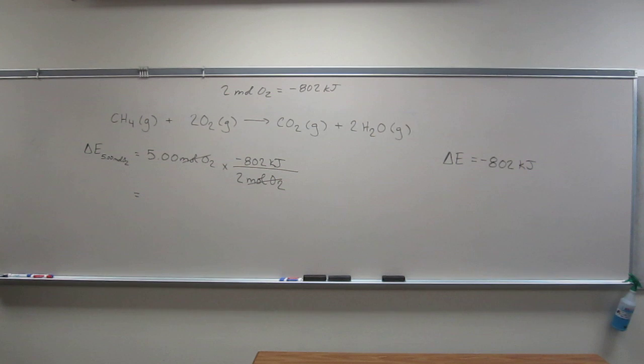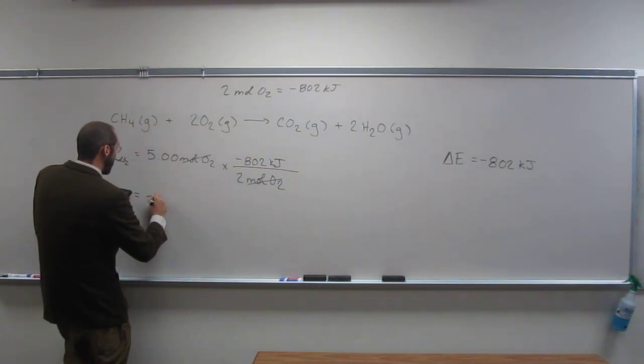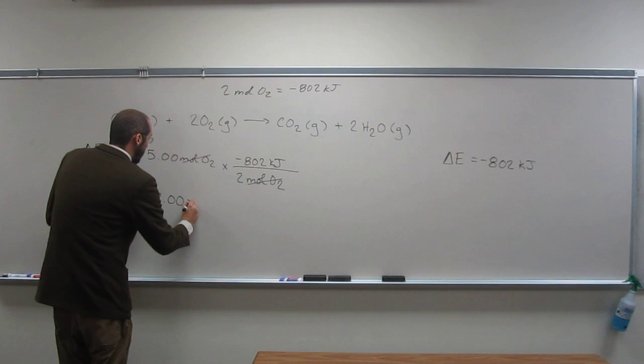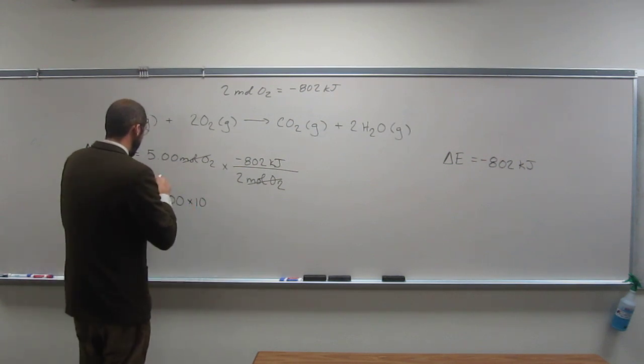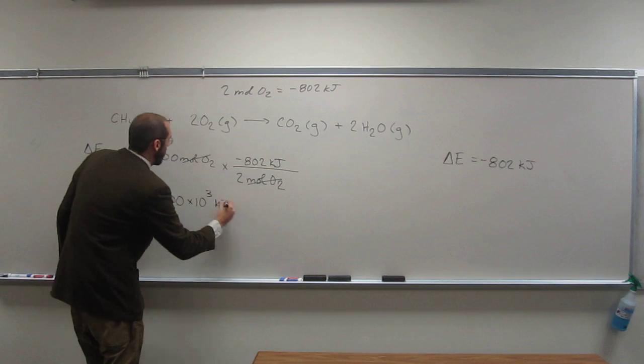So now just 5 times negative 802.00 divided by 2.00. So the answer is negative 2.00 times 10 to the third kilojoules of energy.